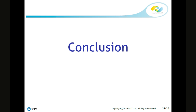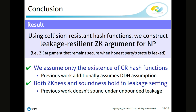In conclusion, in this work I construct a leakage resilient zero knowledge protocol using a collision-resistant hash function. Unlike previous work, we assume only the existence of a collision-resistant hash function. Also, unlike previous work, we construct a protocol that satisfies both zero knowledge and soundness in the leakage setting.